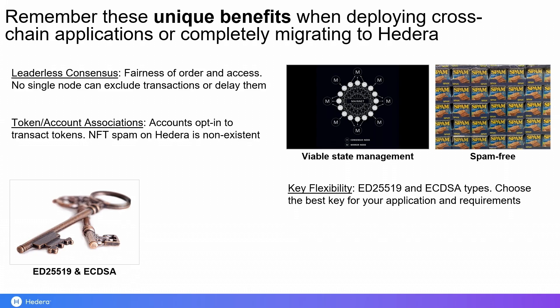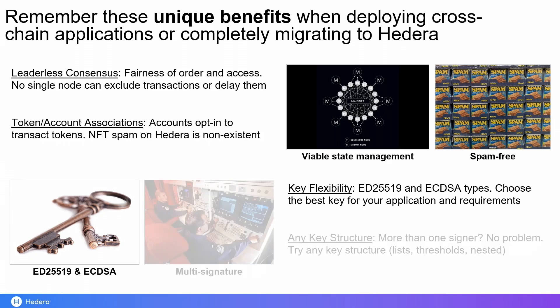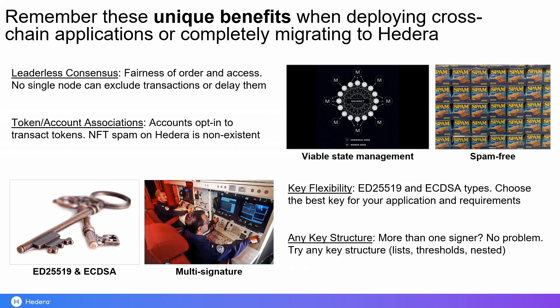You can also handle these associations automatically if you want to participate in an airdrop, so it's a very well-thought-out balance between account security and flexibility. Builders can also choose the different types of cryptographic keys that best meet their requirements — whether they want post-quantum security, higher efficiency, or just EVM compatibility, they can get that with ED25519 keys and also ECDSA keys for their Hedera accounts. And finally, Hedera also supports multisig out-of-the-box. If you need more than one approver for transactions, it's straightforward to do that on Hedera. You can have key structures that match many organizational structures: key lists if you want all approvers to sign, a threshold if you need three out of five, and also nested structures if you want signatures at different levels.